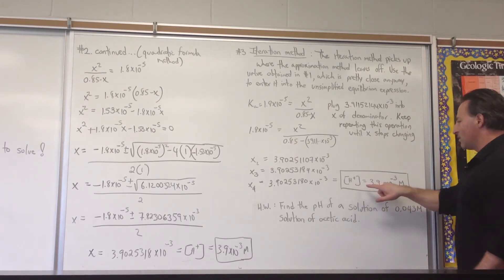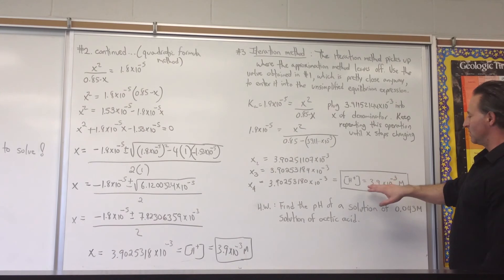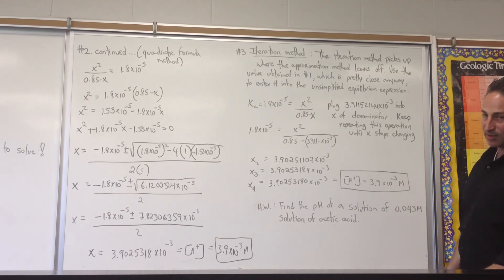With the iteration method, when we revert to two significant figures, which is the maximum allowed for this calculation, you see that you get 3.9 times 10 to the minus 3 molar, which is identical to all the other values obtained in the other two methods.